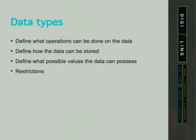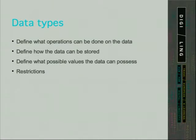Basically, when we select a type of data, we tell Python how we intend to use the data and what we plan to do with it. Data types also have restrictions on how the data can be manipulated. For example, we can't do exponentiation on strings or booleans, but we can on numeric data types.